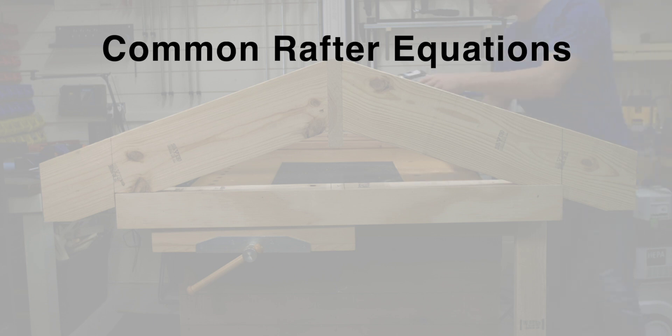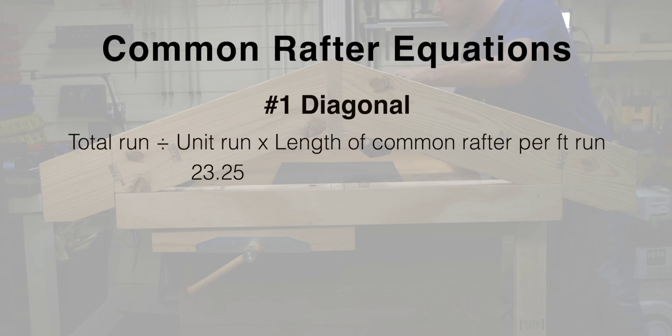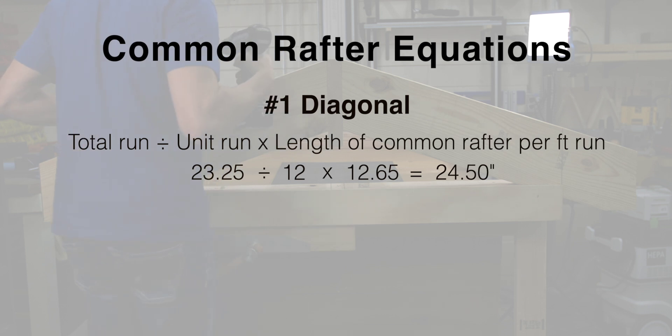Now that we know all the numbers, let's simply plug them in to the equations. Starting with the diagonal measurement equation, 23.25 divided by 12 times 12.65 for a total diagonal measurement of 24.5 inches.